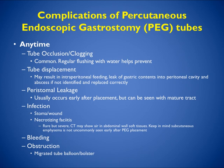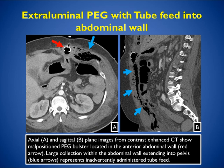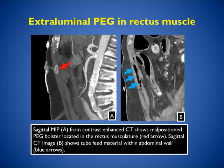Other complications that can occur early or late include occlusion — not uncommon; regular flushing helps prevent this — tube displacement, peristomal leakage, stoma or wound infection, rarely necrotizing fasciitis, bleeding, or migration of the tube balloon or bolster. Here's an example where a large collection within the abdominal wall tracks all the way down into the pelvis. The tube feed is tracking within muscle and the abdominal wall. In another case, there's an extraluminal PEG within the rectus muscle with air visible in the muscle — when we see air in muscle we think infection or necrotizing fasciitis, but it may simply be that the tube is in the wrong place and air enters the muscle when the tube is flushed.